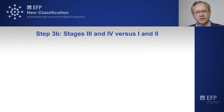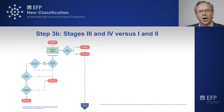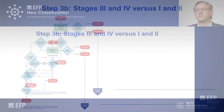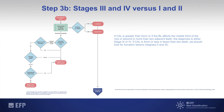Let's move to these steps where we are going to stage the periodontitis case into stages one and two versus stages three and four. If clinical attachment loss is greater than five millimeters, or if the bone loss affects the middle third of the root or beyond in more than two non-adjacent teeth, the diagnosis is either stage three or four.